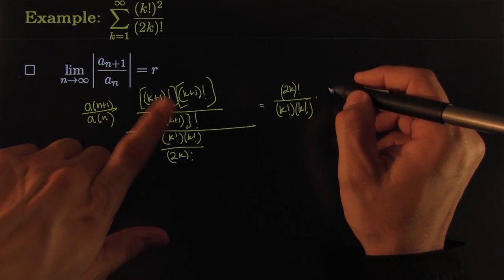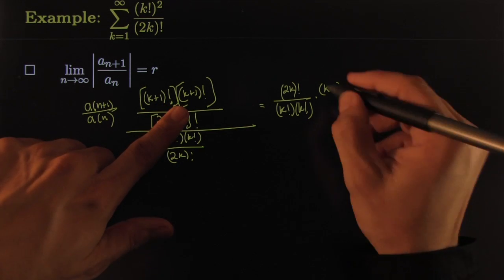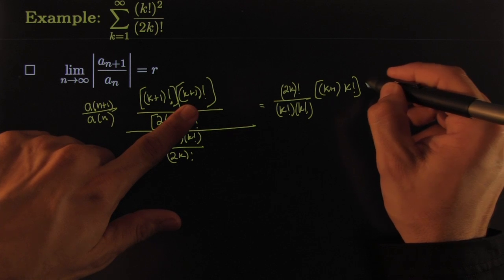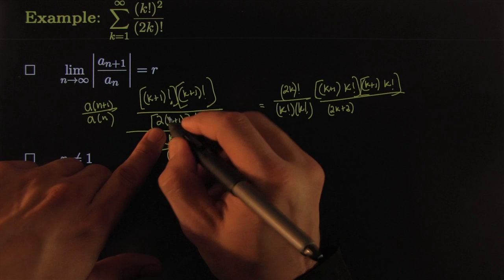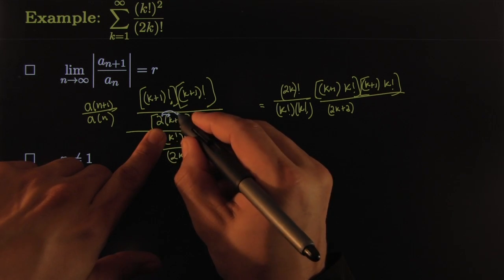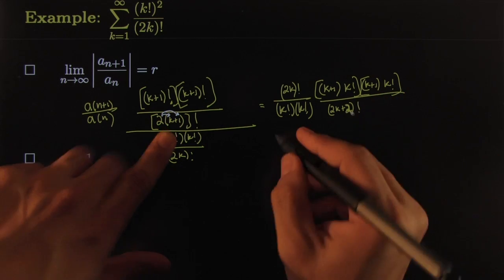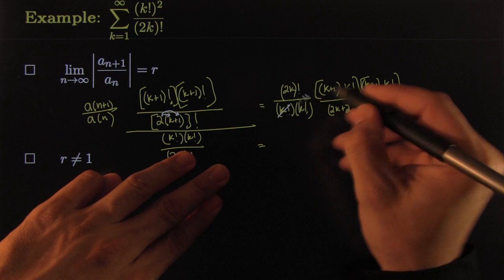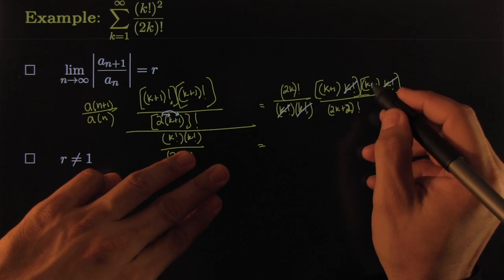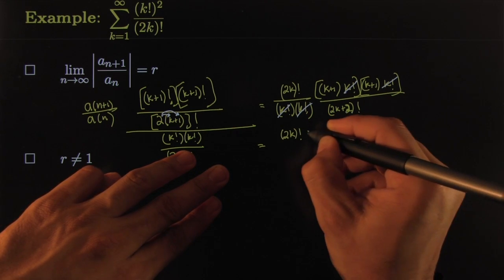Now I can clean this up. I know that (k+1)! = (k+1) times k!, so that piece becomes (k+1) times k!. The same thing happens with the other (k+1)!: it becomes (k+1) times k!. On the bottom, 2(k+1) gives 2k+2. The k! cancels with that k!, and the other k! cancels with that one — both k! terms cancel.